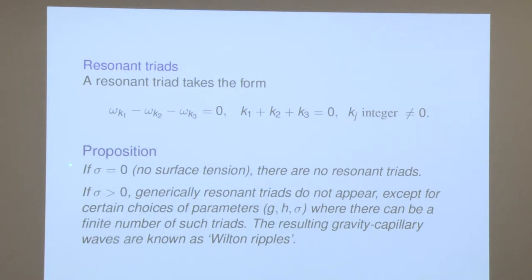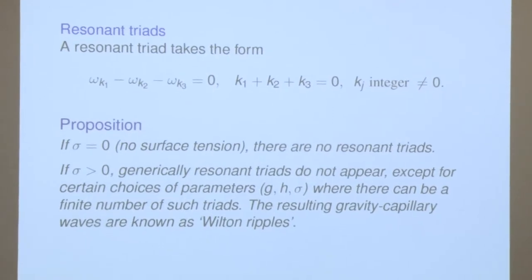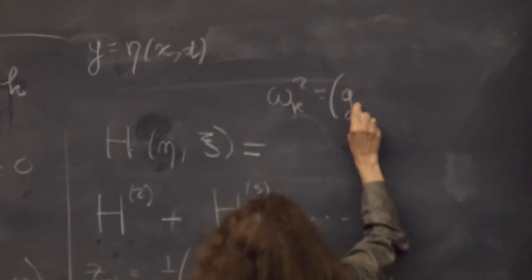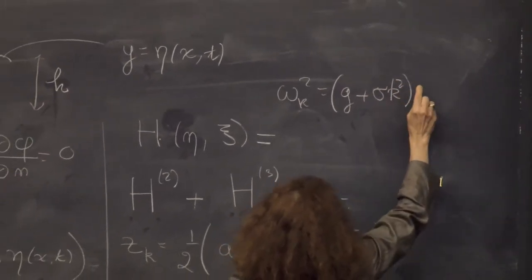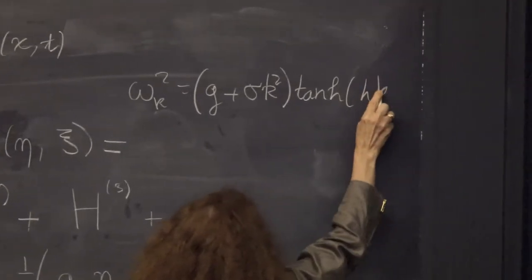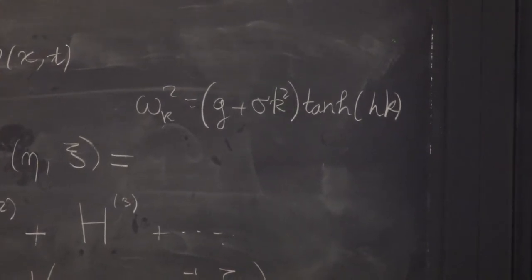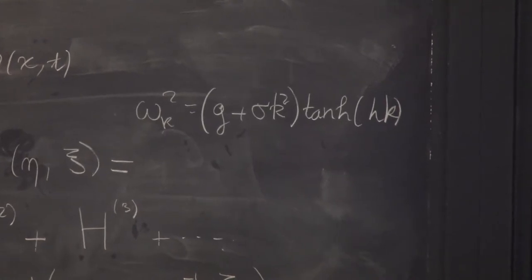An important proposition is that if sigma equals zero — no surface tension — there are no resonant triads. On the other hand, if sigma is strictly positive, resonant triads generally do not exist but may appear for certain parameter values. This is due to the fact that omega_k is always concave when sigma equals zero, but if sigma is nonzero there is a change of concavity in the dispersion relation.